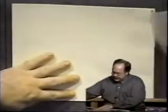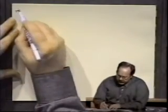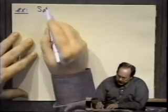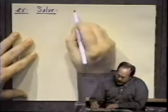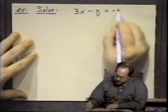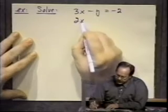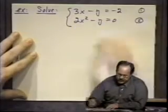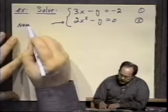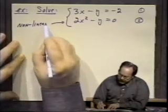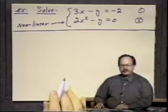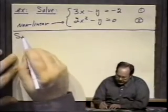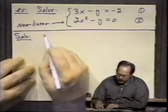Let's get right into this. I'll do two examples, since this is really sort of ad hoc work. The first system is: 3x minus y equals minus 2 — call that equation 1 — and 2x squared minus y equals 0 — equation 2. There's only one nonlinear equation; the second one is nonlinear and the first one is linear.